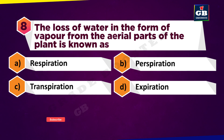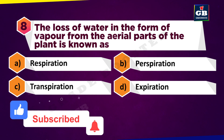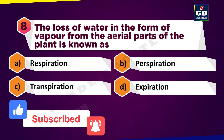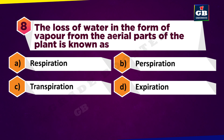The loss of water in the form of vapor from the aerial parts of the plant is known as: A. Respiration, B. Perspiration, C. Transpiration, D. Expiration.